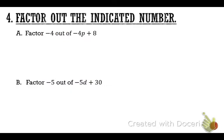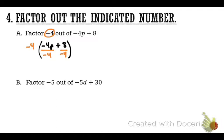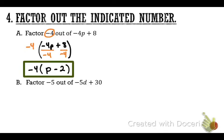Section four asks us to factor out the indicated number — the number the problem specifies. For problem A, factor out negative 4. Circle it. Divide both terms by negative 4. Negative 4 divided by negative 4P: a negative divided by a negative is positive, so that's positive P. Then positive 8 divided by negative 4 is negative 2. Remember the even and odd rule when multiplying and dividing integers.